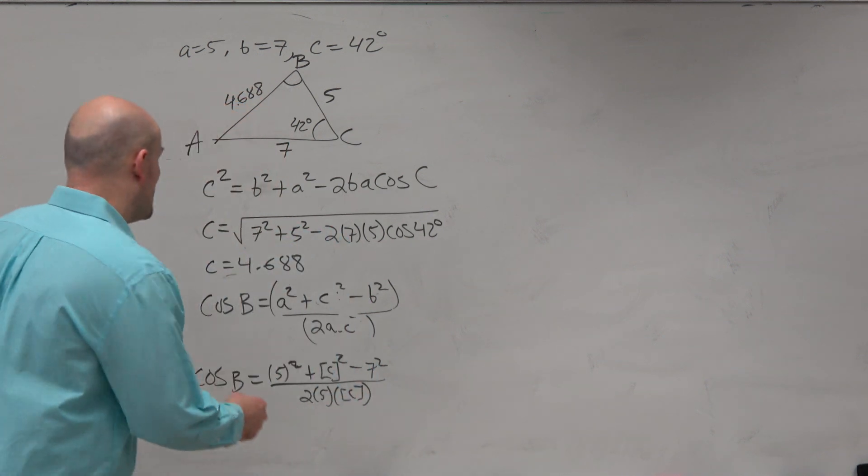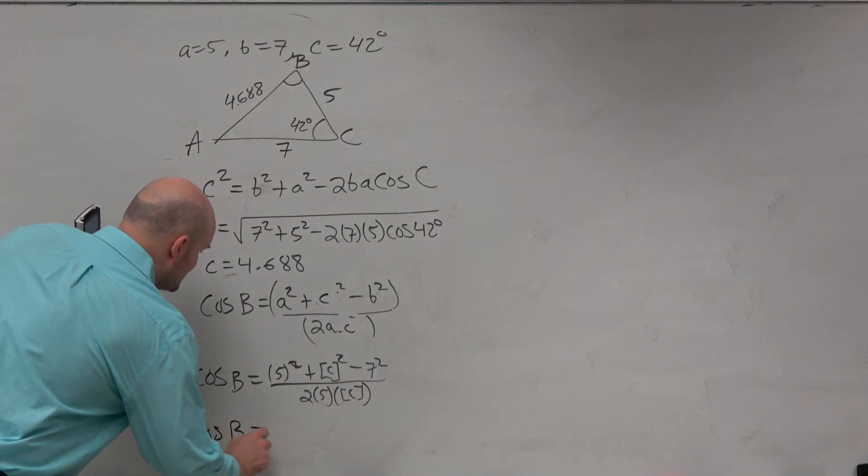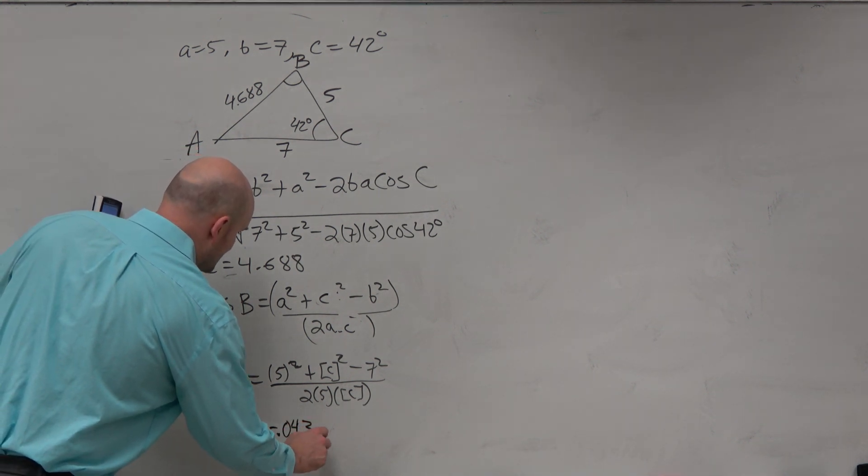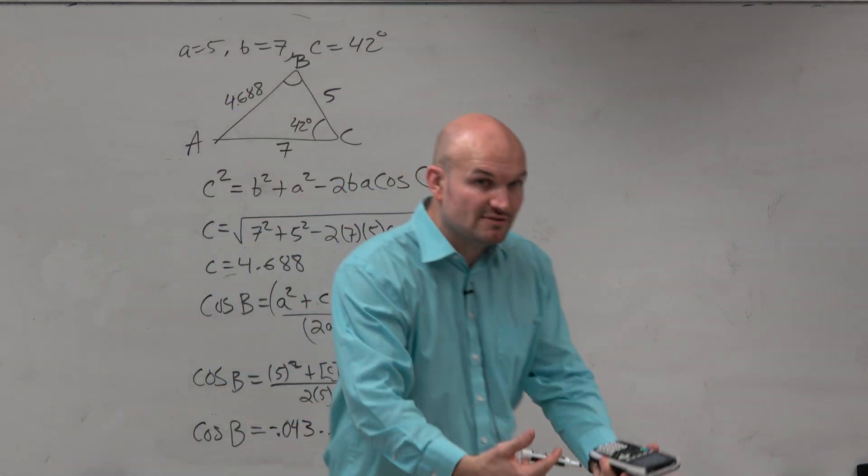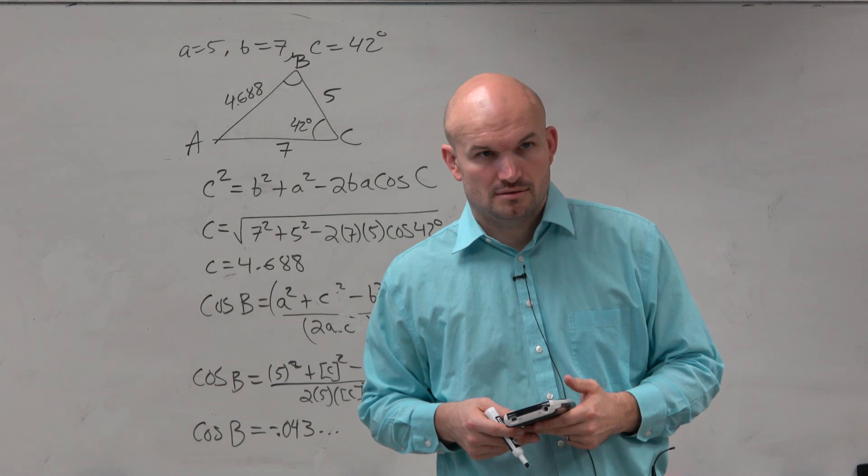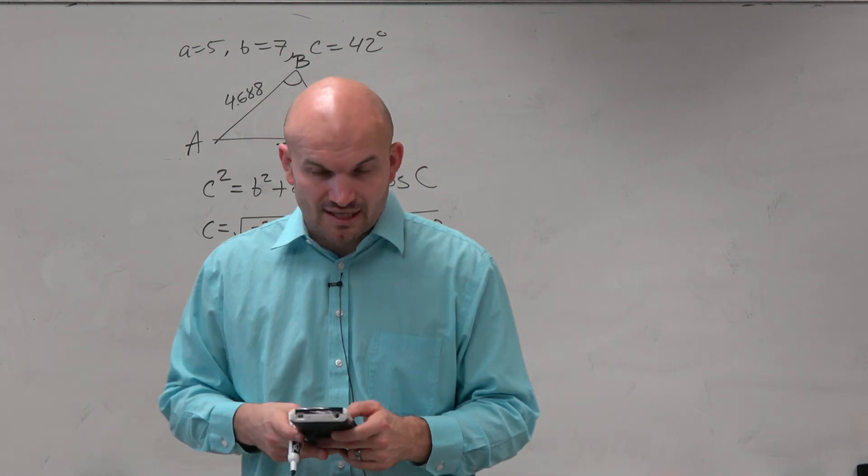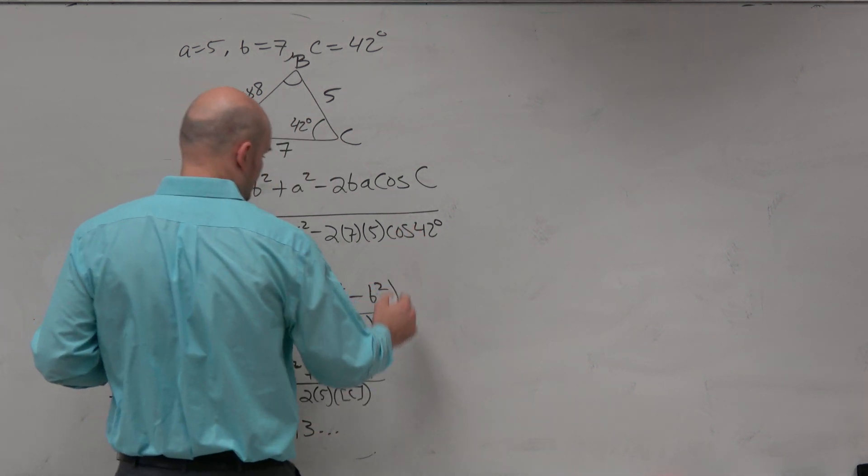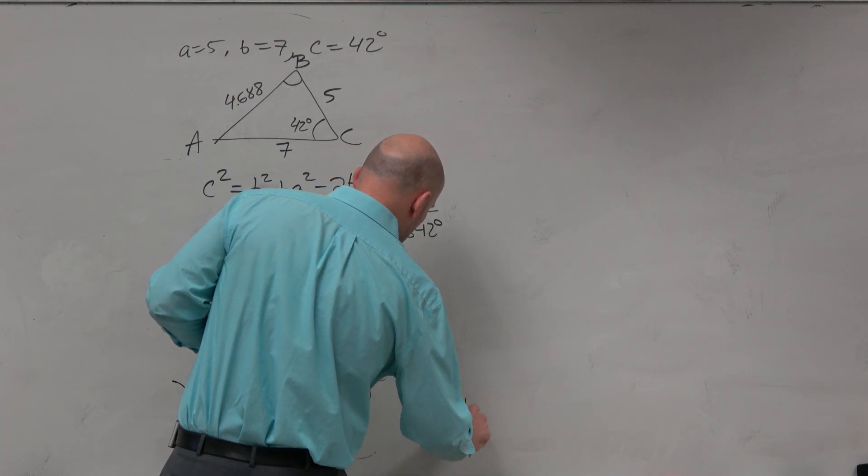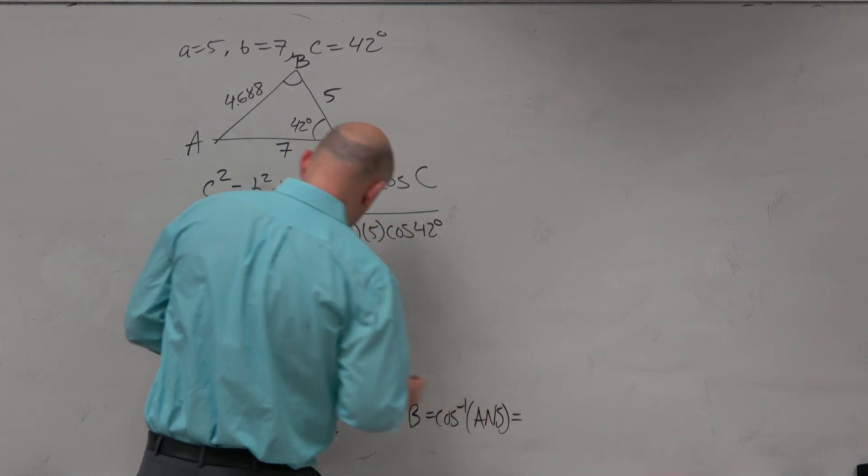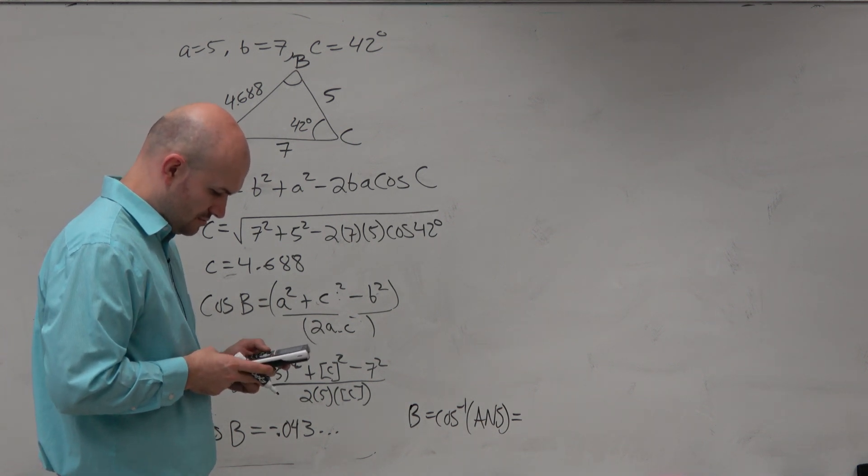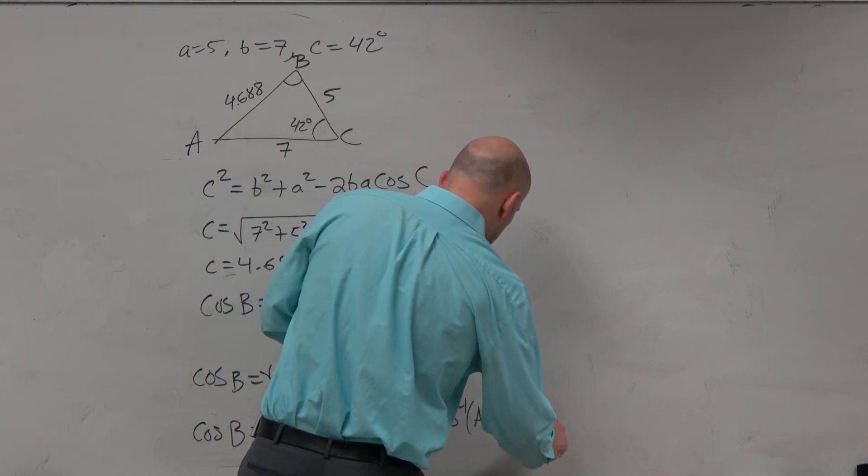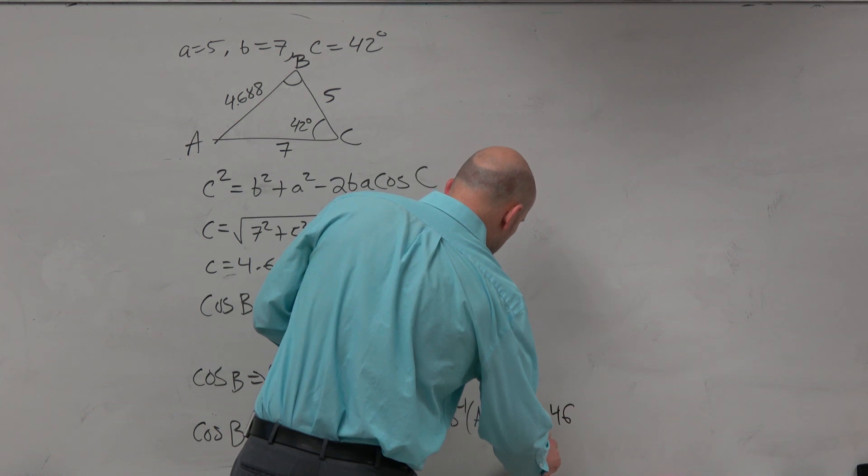Again, make sure you're using those parentheses. 2 times 5 times stored answer C. All right, and I get negative 0.0430892077. Is that the angle? No. That's the cosine of B. Right? It doesn't make any sense, guys, to have a negative angle. You're not doing anything wrong. You just need to understand that now I just need to take the cosine inverse. OK? So you do the cosine inverse of the last answer. So you can say B equals the cosine inverse of our last answer. And that's going to equal, shoot, 92.46, which we can round to 92 degrees.